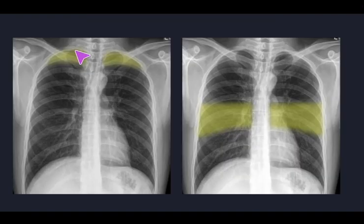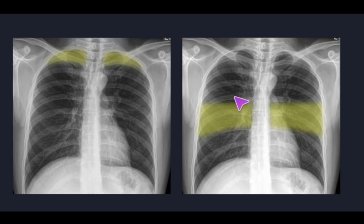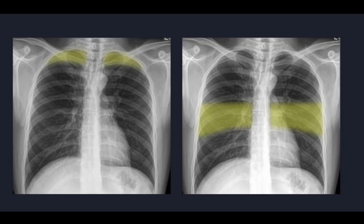The apical zone is at and above the clavicles. The upper zone is from the level of the clavicles to the superior hilar margin. The middle zone is between the superior and inferior hilar margins. The lower zone is from the inferior hilar margin to the costophrenic angle.